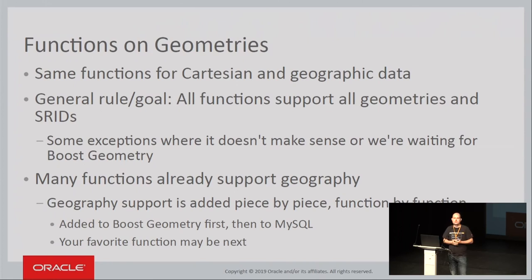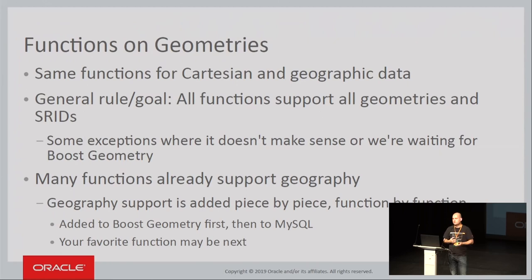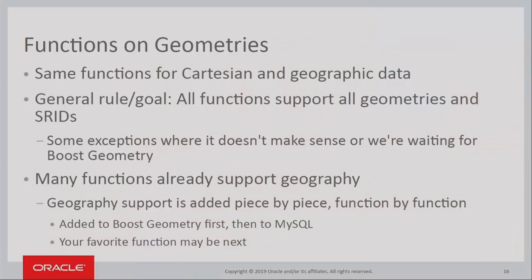The same functions work on both Cartesian and geographic data, and we want it that way as long as it makes sense — longitude/latitude only makes sense for geographic, but apart from that, all functions work for all data types. We also have a general rule that all functions should support all geometries, including geometry collections for union, intersection, and so on. Sometimes we're waiting for Boost Geometry to finish, so we might release a version with limited support for some data types or spatial reference systems. Right now we have some functions that don't yet support geography, but it's coming — we take it function by function. If you want us to prioritize a certain function, give us a shout.